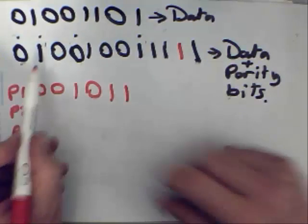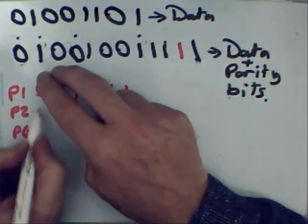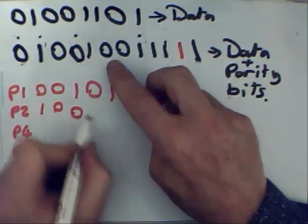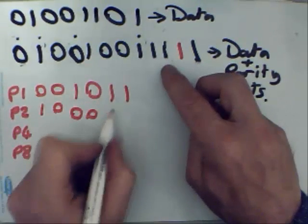And then for bit position 2 it's now going to be in pairs so we're going to check 2 bits, skip 2 bits, 2 bits, skip 2 bits, 2 bits.